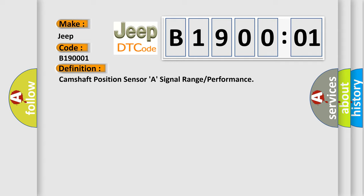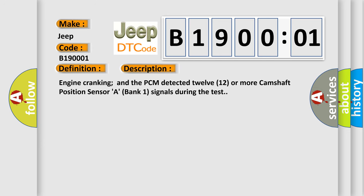And now this is a short description of this DTC code: engine cranking and the PCM detected 12 or more camshaft position sensor A bank one signals during the test.